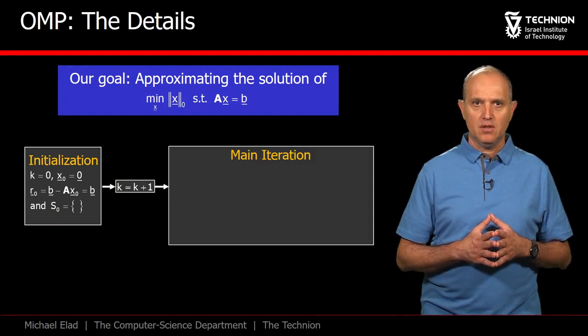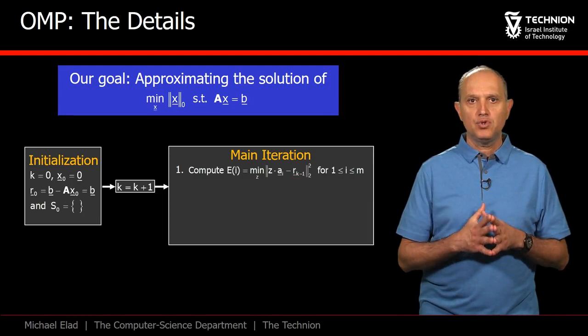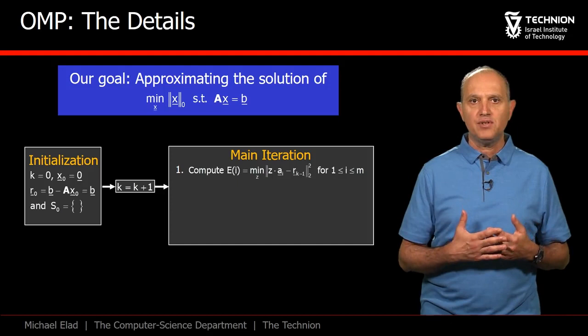We increase k by 1 and perform the following steps. Given the residual Rk minus 1, we search for the best column to choose from A, such that when multiplied by a scalar, it gives the smallest L2 difference from the residual.